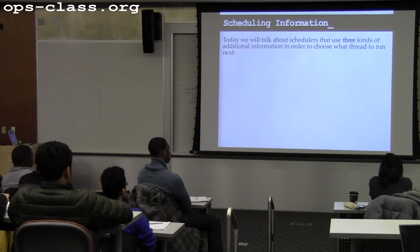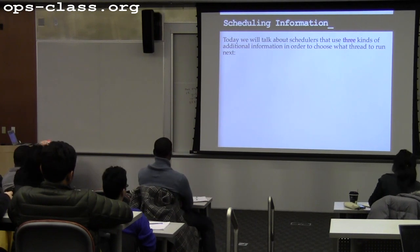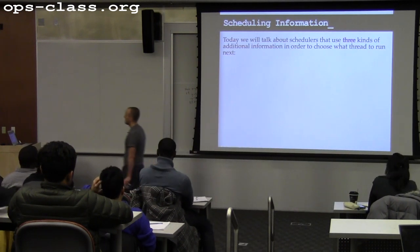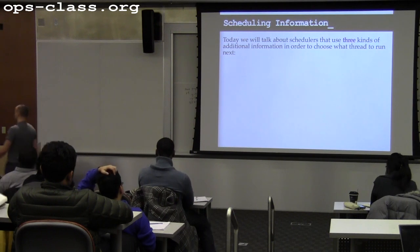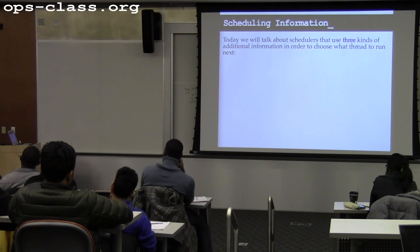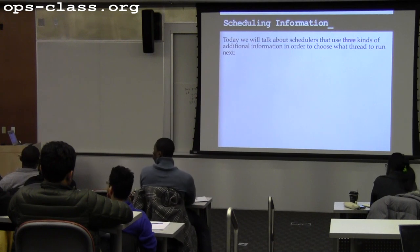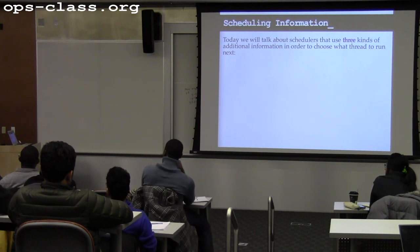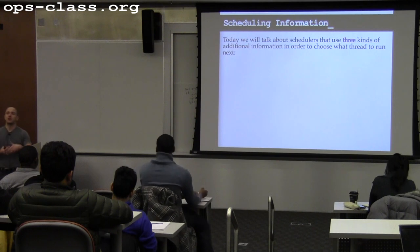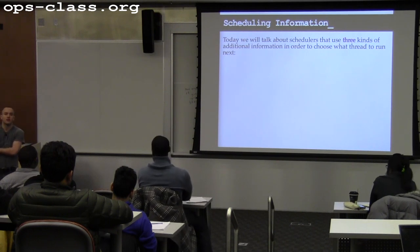When making a scheduling decision, what might you want to know? You might want to know something about priorities — an artificial way of establishing importance between different threads. You might also want to know how long a thread would run without blocking, though you're probably going to have to run the thread to find that out.